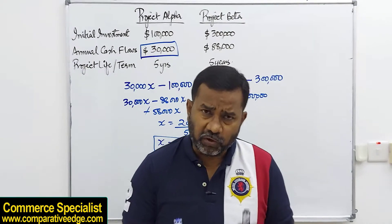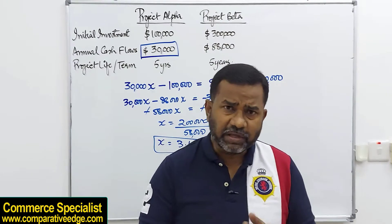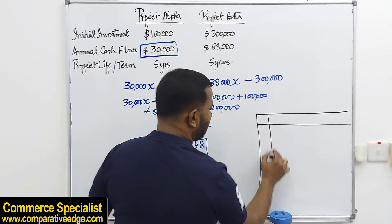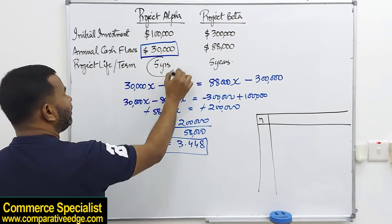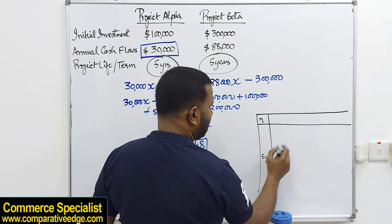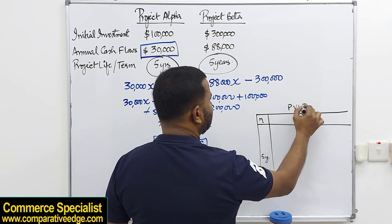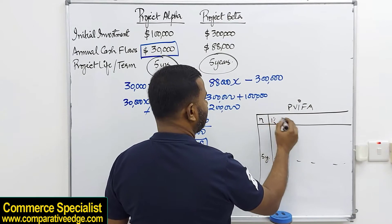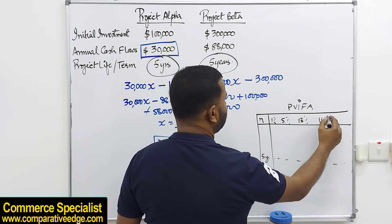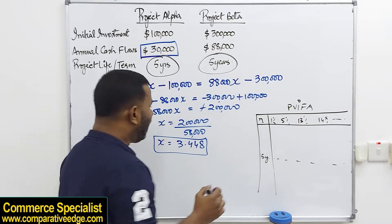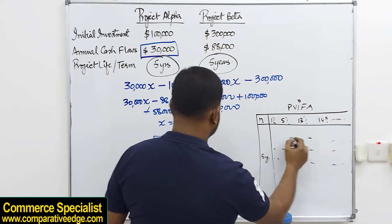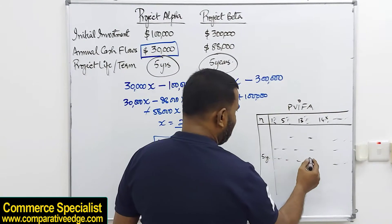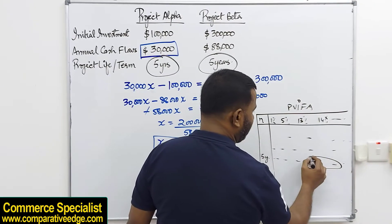Once we get X equal to 3.448, the next step is to check in the annuity table — the present value annuity table. Here we have N, the number of years; since both projects run for 5 years we look at the row for 5 years. Across the columns we have present value interest factors for annuities at various percentage rates such as 1%, 5%, 13%, 14%, and so on. We need to find the annuity factor closest to 3.448.